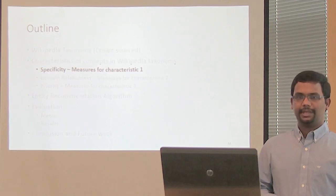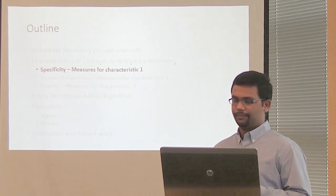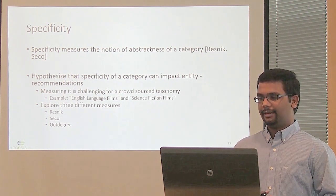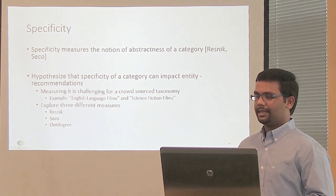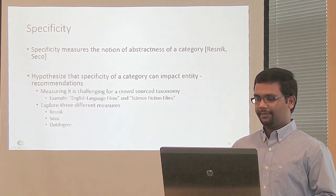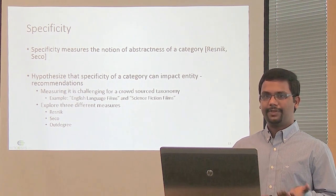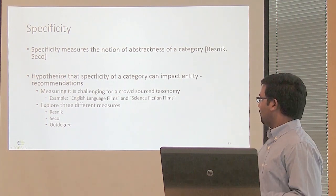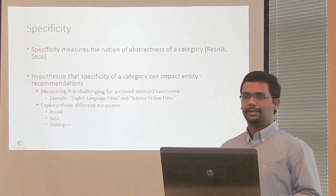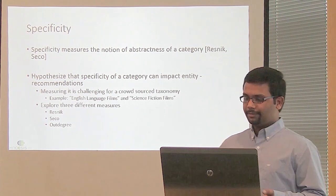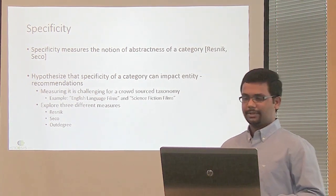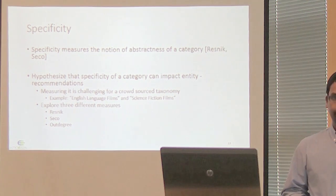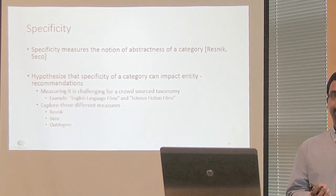Specificity measures the notion of abstractness of a category. A category such as 'science fiction film' is more specific than a category like 'film'. We hypothesize that utilizing specificity as a characteristic can help make better recommendations. However, measuring the specificity of categories in a crowdsourced taxonomy has been challenging. For example, 'English language films' and 'science fiction films' are at the same hierarchical level in this taxonomy, making it difficult to determine which is specific and which is abstract.